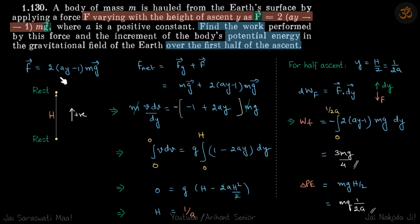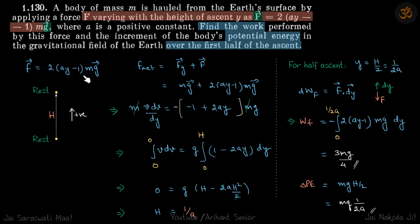The net force is due to gravity and this external force: fg vector plus F vector, which we write as mv dv/dy since force is a function of y. Initially and finally the velocity is 0, because as y increases, the force increases in the downward direction, so the body eventually stops.